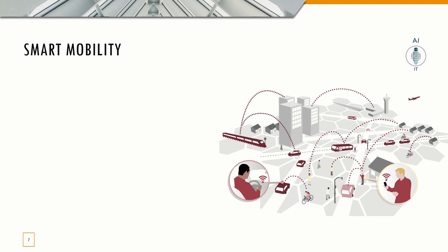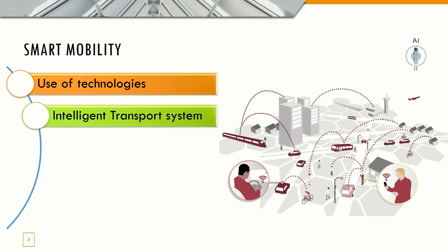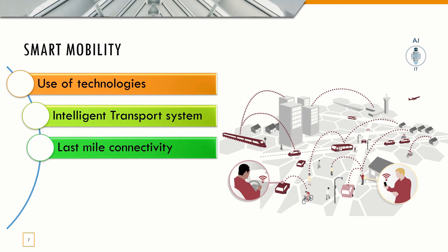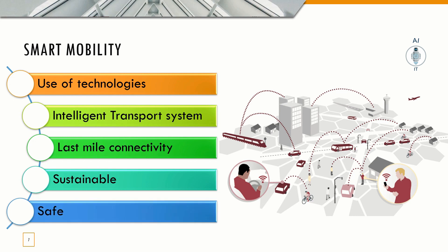Smart mobility means the city should have good accessibility to various cities in the country by road, by air, or by water. It has to make use of technologies for designing bridges and highways. An intelligent transport system must be in place, and last mile connectivity must be provided to all possible areas outside the city. The transport system should be sustainable, not polluting the environment, and must ensure the safety of commuters in and outside the city.